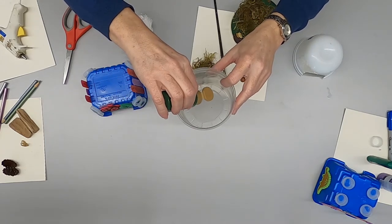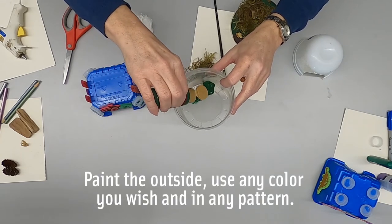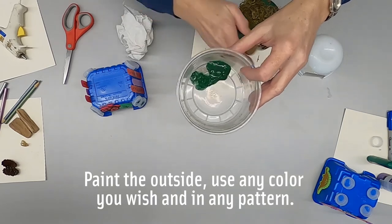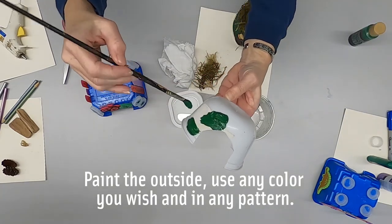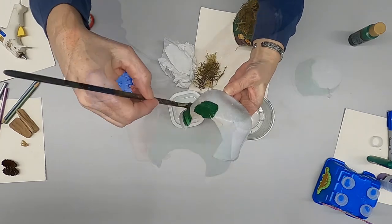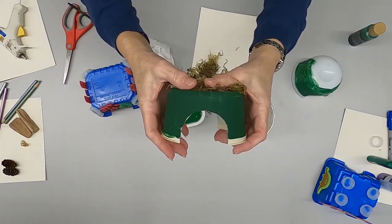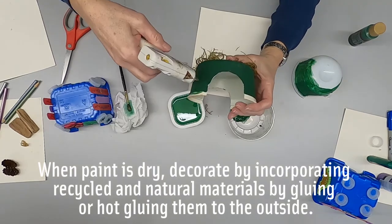Since we decided to change the color of our container, we went with some paint. Brushed paint on the outside and let it dry. Once it was dry, we were ready to add our other embellishments.